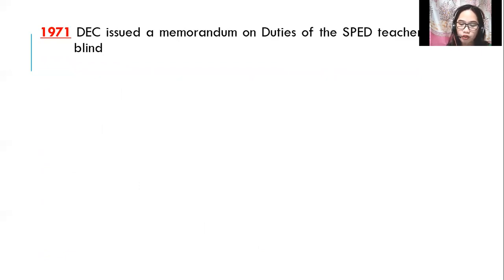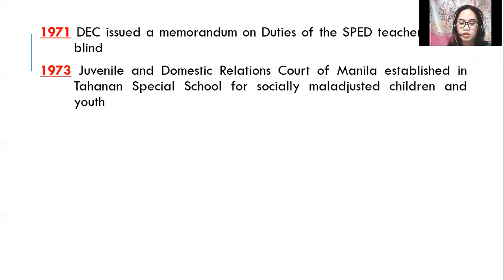The Philippine School for the Deaf, or PSD, stayed in the original building, and the Philippine National School for the Blind, or PNSB, was built next to PSD. Also in the same year, a special school was established in San Pablo City — the Paaralan ng Pag-asa at Pag-ibig. In 1971, the Department of Education and Culture issued a Memorandum on Duties of the Special Education Teacher for the Blind. In 1973, the Juvenile and Domestic Relations Court of Manila established the Tahanan Special School for Socially Maladjusted Children and Youth.